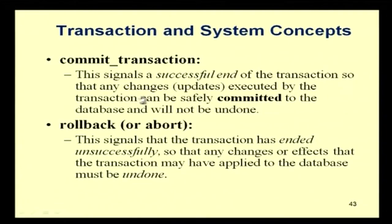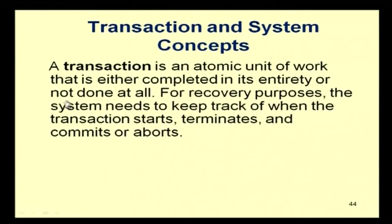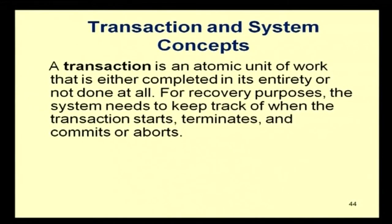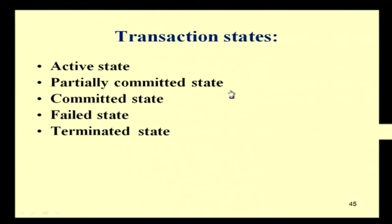A transaction is the atomic unit: either it has to be completed in its entirety or not at all. For recovery purposes we keep track of when the transaction starts, terminates, and whether it commits or aborts. The states associated with a transaction are: active state, partially committed state, committed state, failed state, and terminated state.